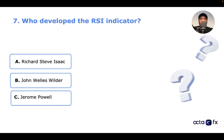The seventh question: who developed the RSI indicator? A: Richard Steve Isaac. B: John Welles Wilder. C: Jeremy Powell. Let me know in the comments if you know the right answer.